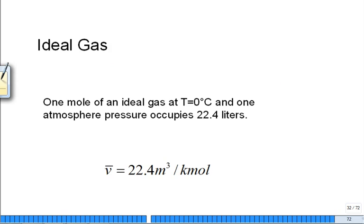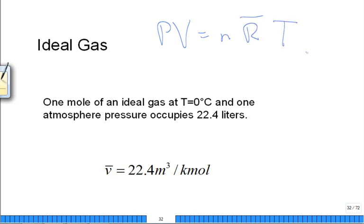Ideal gas. Everybody knows ideal gas equation. PV is equal to n, r bar, t. More of that in chapters two and three, but you have been exposed to it. I see I'm out of time, so I'll go ahead and stop there. Thank you very much for your attention.